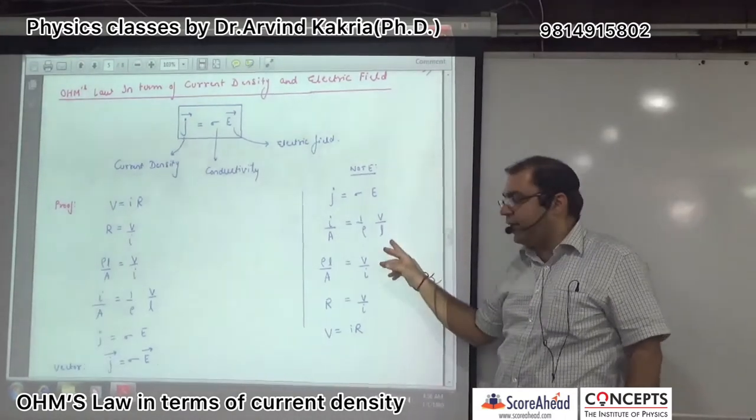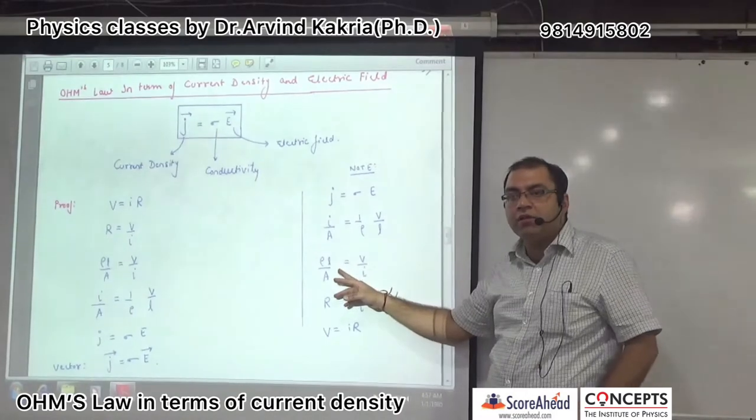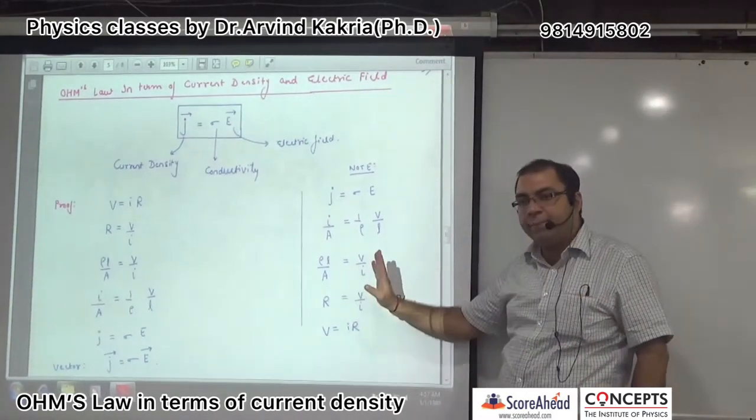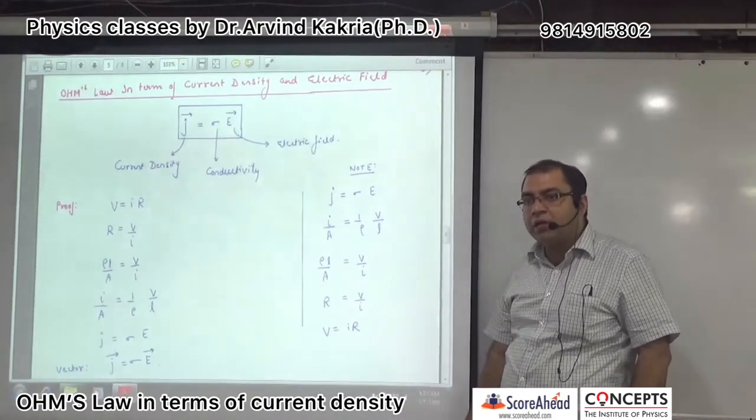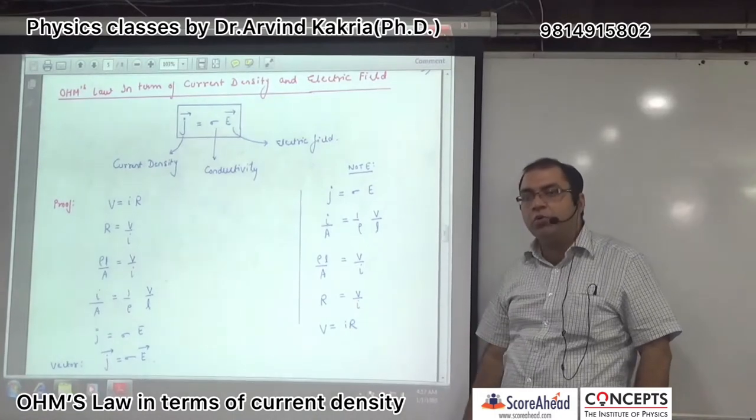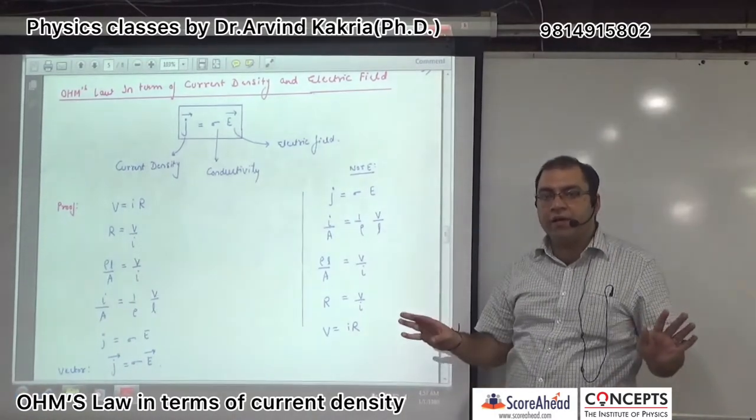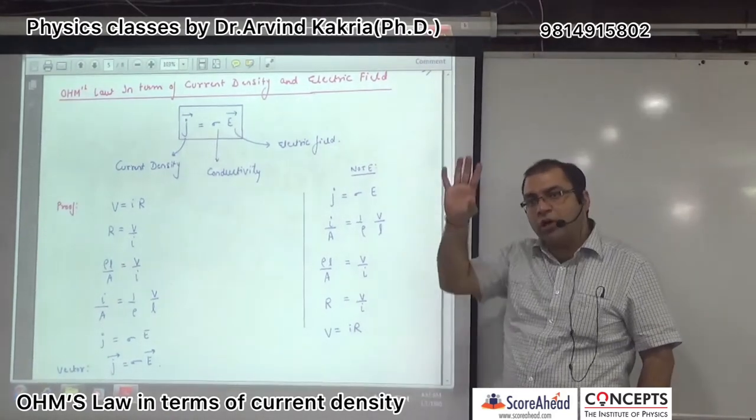So E equals V by L. Put V and I on one side, the rest of the terms on the other side. What does this term have? Rho L by A. What is resistance? R. The R value is equal to V by I. So this gives us V equals IR. This means this term is equal to Ohm's law. Clear?